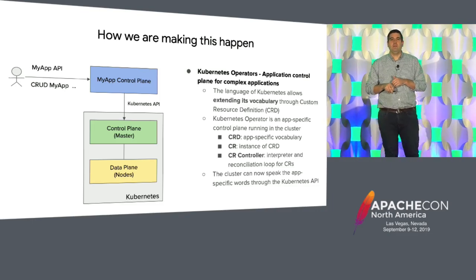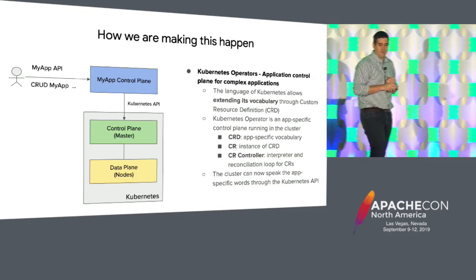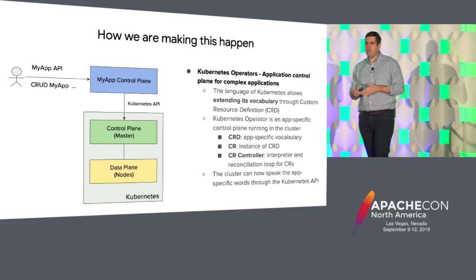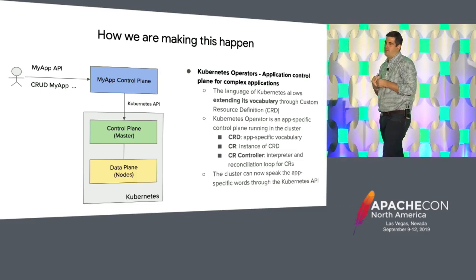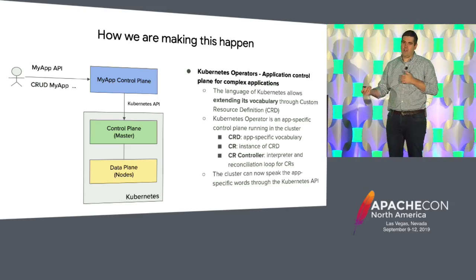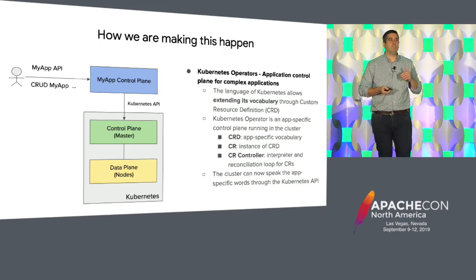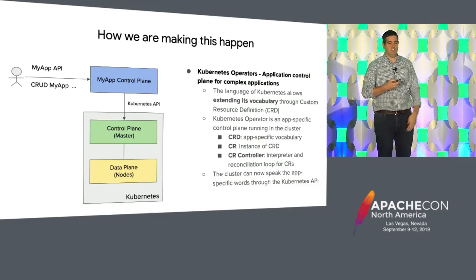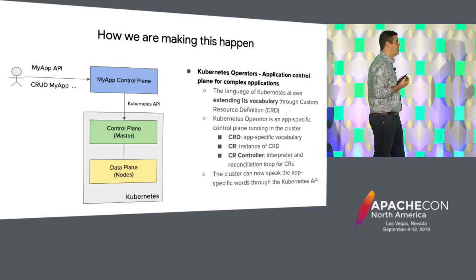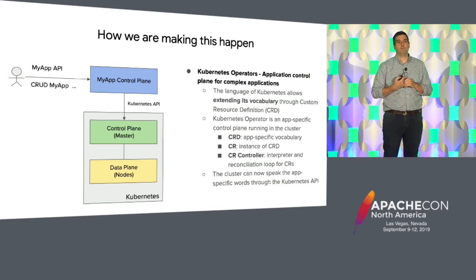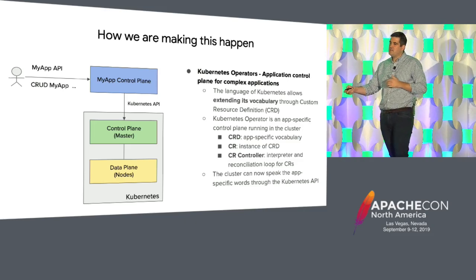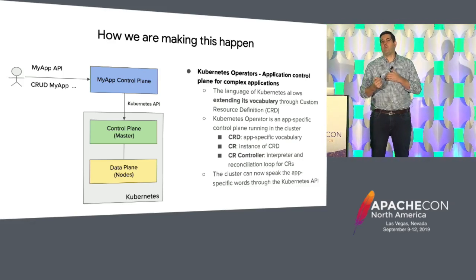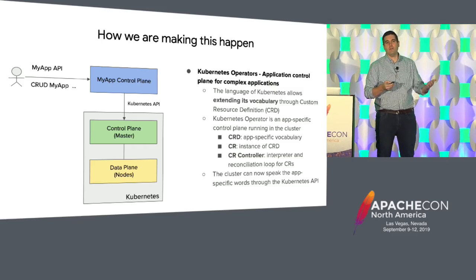The way we're making this happen is via Kubernetes operators. If you don't know what that is, it's essentially an application control plane for running really complex applications in Kubernetes. It's an opinionated way that Google is going to provide for doing a lot of this stuff — it takes a lot of the knowledge Google has of running these applications for years and sticks those into a Kubernetes architecture. This is done through extending Kubernetes functionality via custom resource definitions, meaning you can extend the language of Kubernetes to make it look and feel a lot more like the actual application you're trying to run. So you don't have to understand all the nuances of Kubernetes — you can work with Spark how you'd expect to work with Spark.